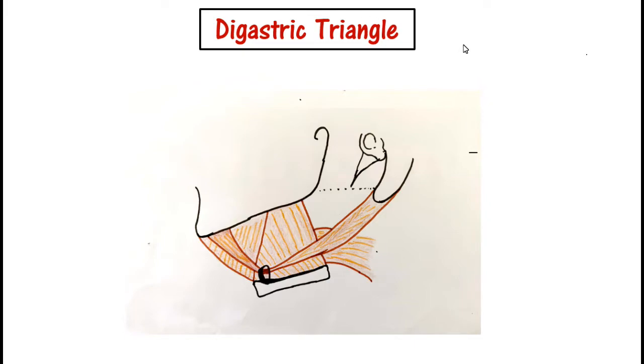Now we will discuss the floor of the triangle. Anteriorly we have the myelohyoid muscle, posterior to that is the hyoglossus muscle, and posteriorly we have a small part of the middle constrictor muscle.